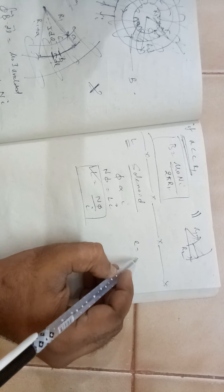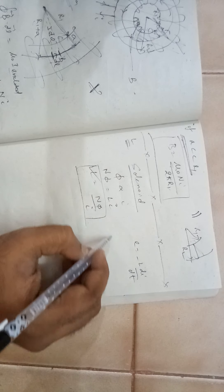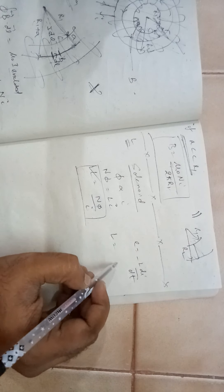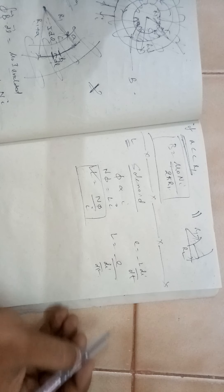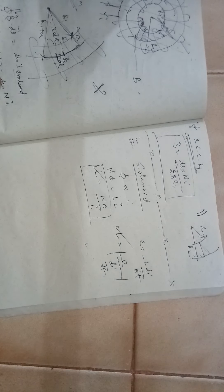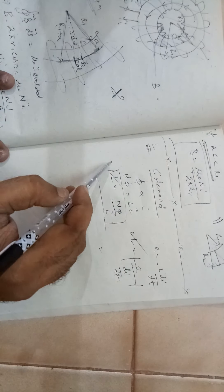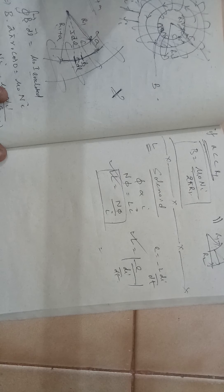Another equation what we have seen is E is equal to minus L di by dt. If you want to know the magnitude of L, E divided by di by dt. This is another definition of L. There are two ways of finding L. We will use this method to find out the inductance value of a toroid.